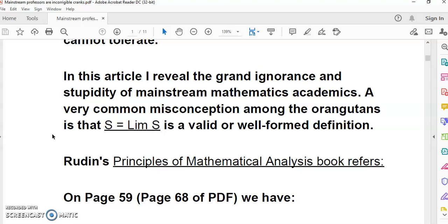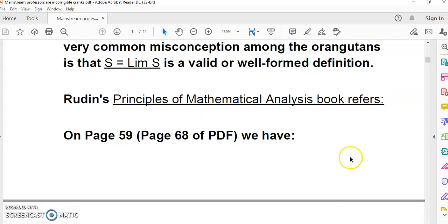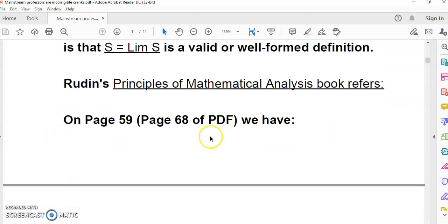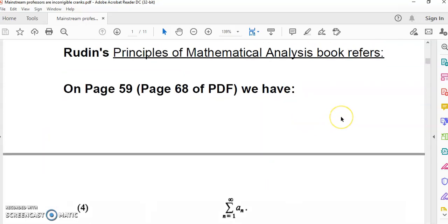The dead academic called Euler, or Leonhard Euler, actually made the definition S = Lim S. I want to show you that that definition actually found its way into Rudin's popular Principles of Mathematical Analysis book. This is the typical textbook that one will use as part of a real analysis course in mathematics.